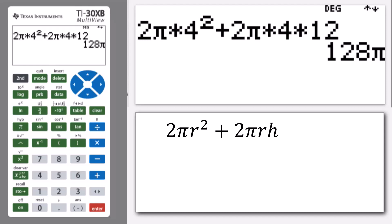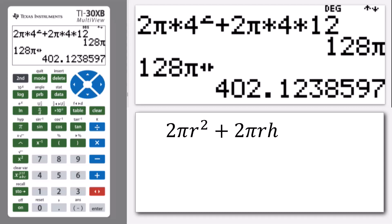If you want to know how big that is, you can press the toggle button to get the decimal approximation, 402.12 centimeters squared to two decimal places. All right, but as I said we could also have used it in the factorized form and that's even easier.